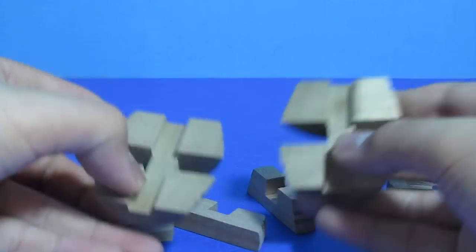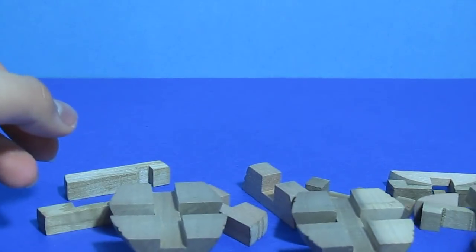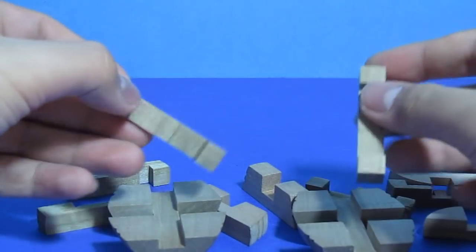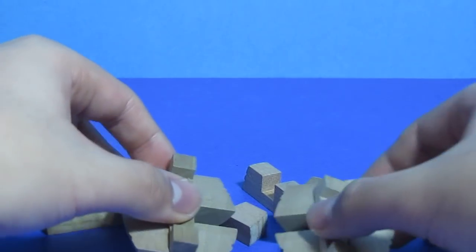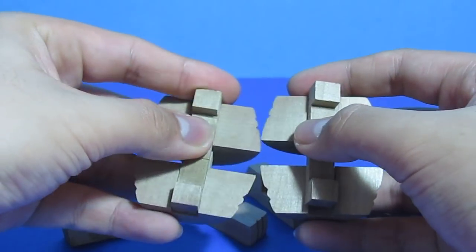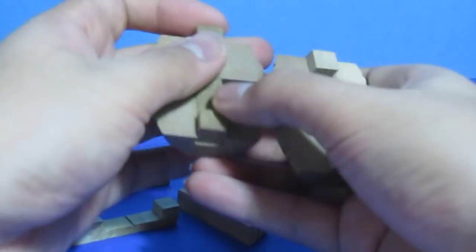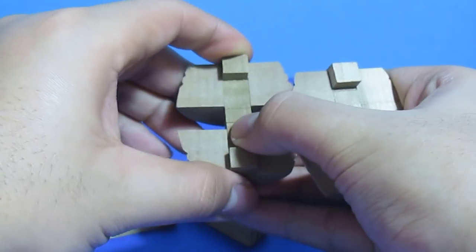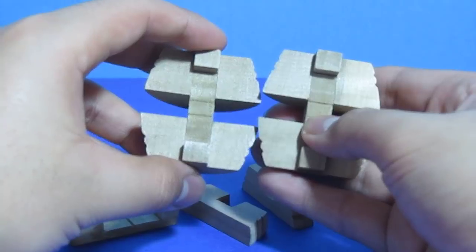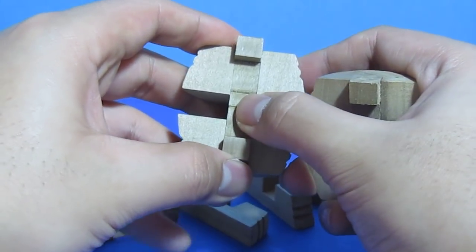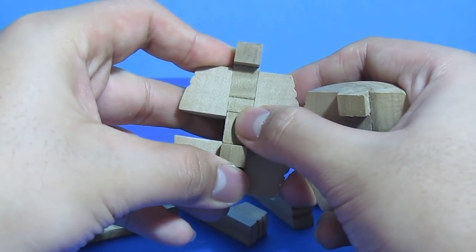Okay, so first you want to get these two halves. And you want to get two of these. Now you want to just position them together like this and slide them inside. They fit quite snugly on this one. Now this should actually be off a little bit like this.